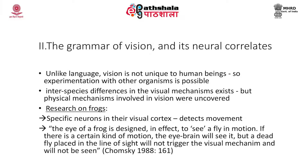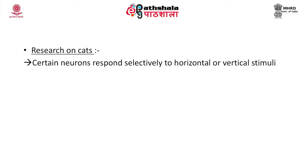Interspecies differences do exist in visual mechanisms, but we were able to uncover the basic physical mechanisms underlying vision. Research on frogs showed that there are specific neurons in the visual cortex that detect movement. To quote Chomsky (1988): 'The eye of a frog is designed in effect to see a fly in motion. If there is a certain kind of motion, the eye-brain will see it. But a dead fly placed in the line of sight will not trigger the visual mechanism and will not be seen.'